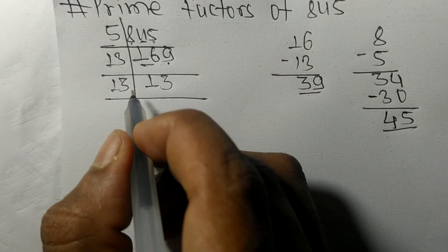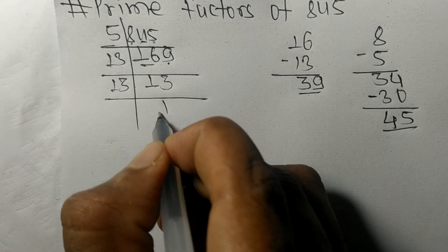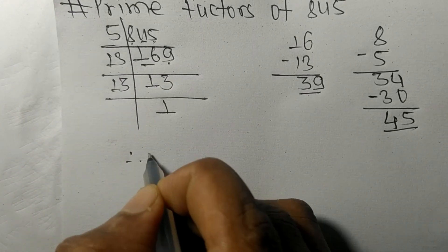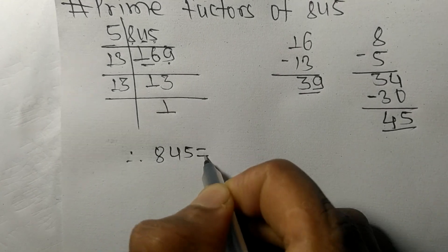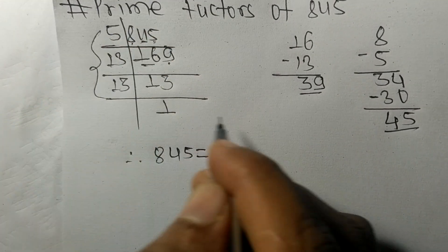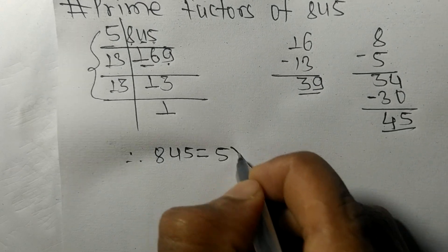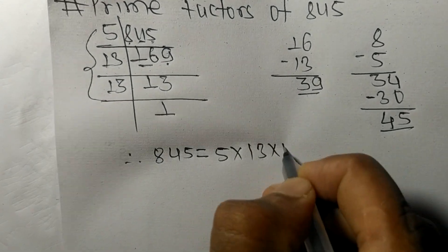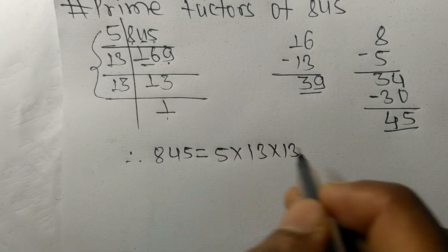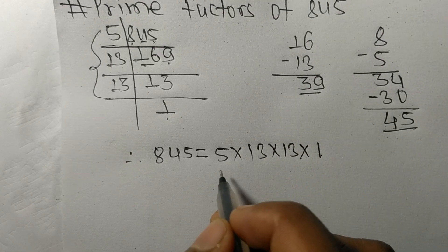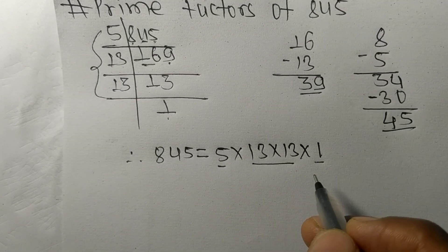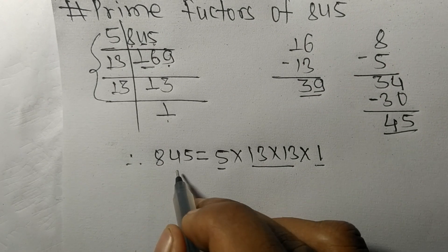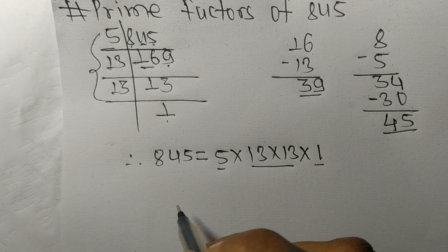On dividing we get 1. Therefore 845 is equal to, from this side, 5 times 13 times 13. From here it is 1. So 5, 13, and 1 are the prime factors of 845.